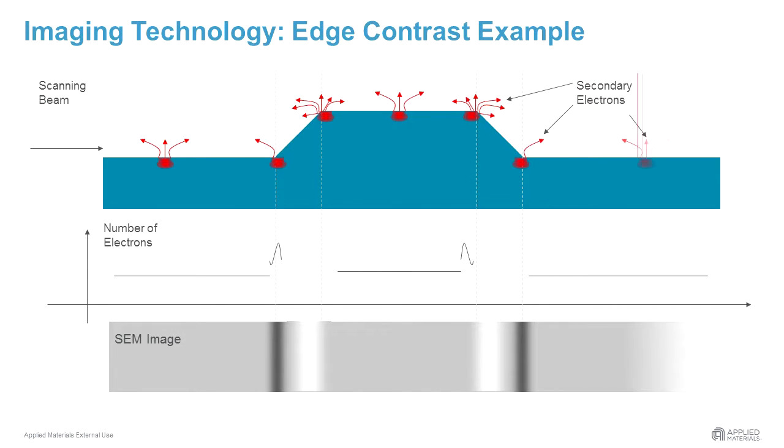This is the reason why edges appear brighter in the SEM image. This effect is called edge contrast and is commonly used to image the surface topography.